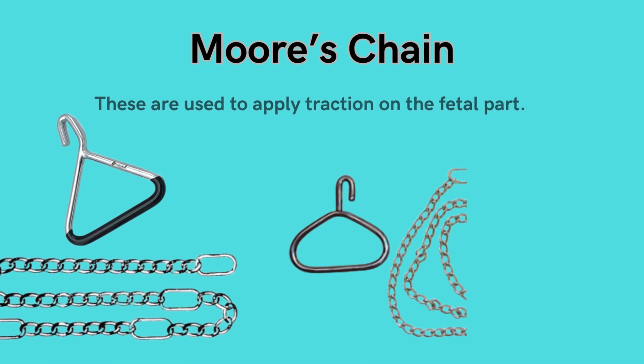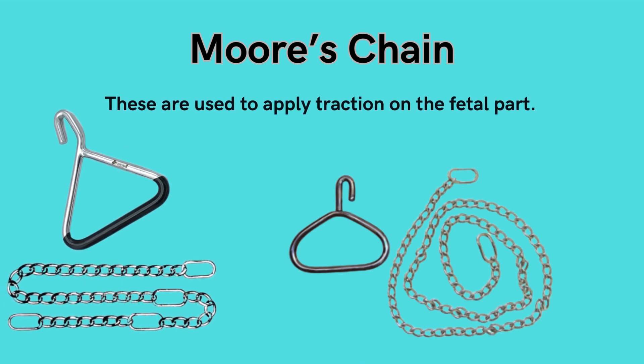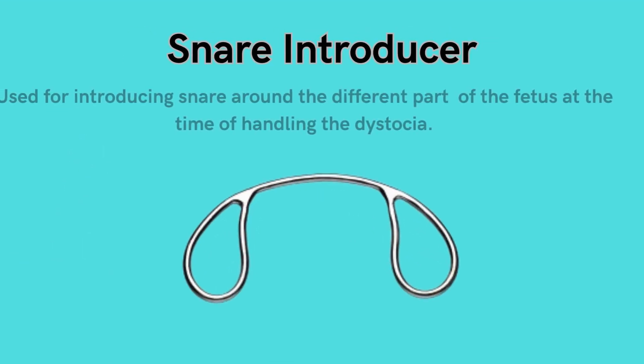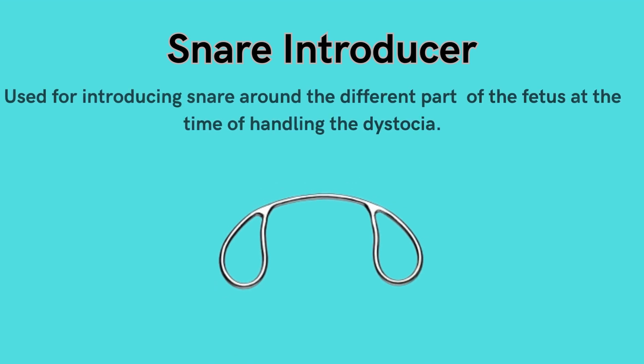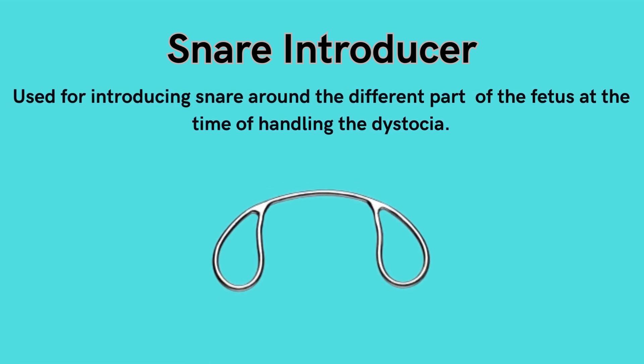Moore's chain: used to apply traction on the fetal part. Snare introducer: used for introducing a snare around the different parts of the fetus at the time of handling dystocia.